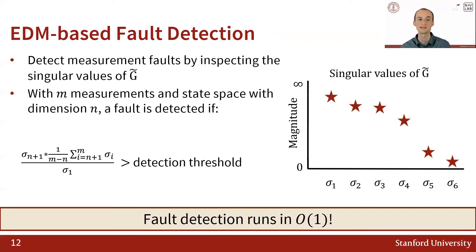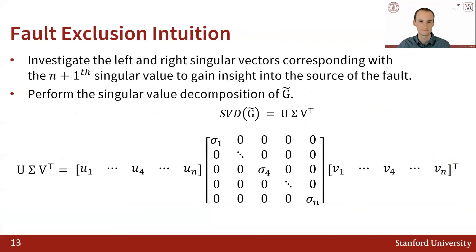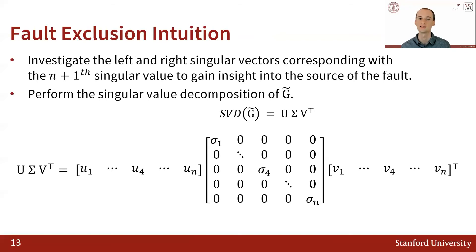Next, I will discuss how we can figure out what measurement to exclude once we detect a fault. The intuition behind our fault exclusion strategy again relies on inspecting the singular values that should be zero if we had perfect measurements. In a 3D state space, we'd expect that the fourth singular value should be zero. However, if it's not, then we will detect a fault. In order to determine what measurement is causing that fault, we can look at the absolute value of the left and right singular vectors corresponding to that fourth singular value.